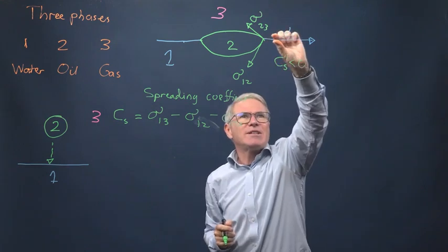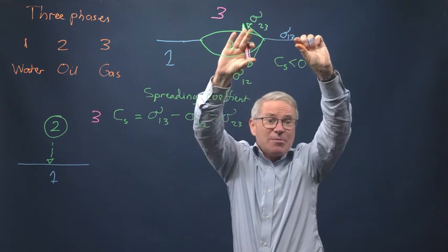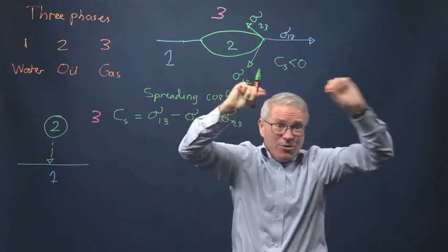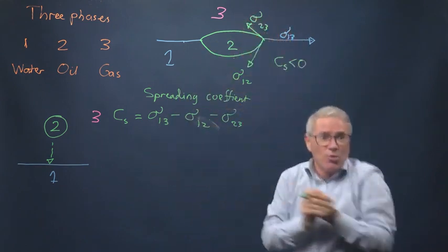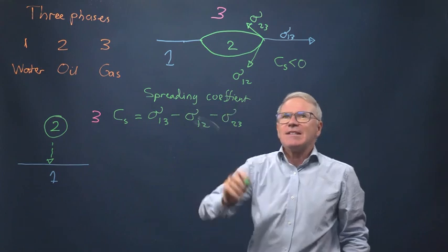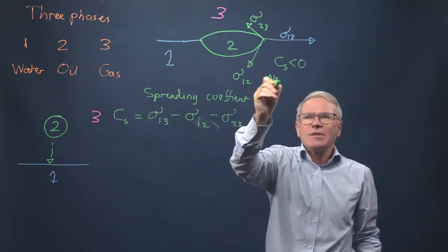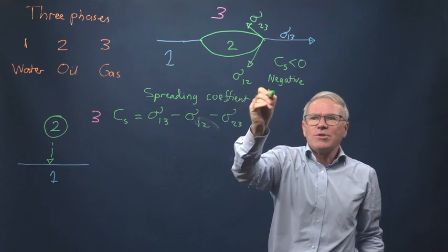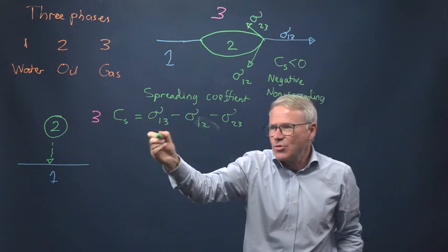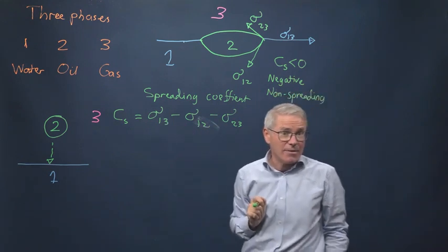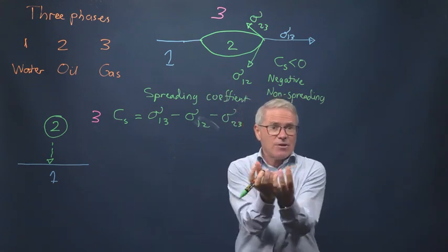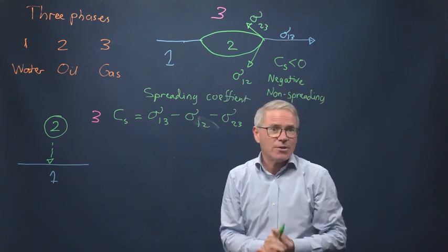Why is that? Well, this interfacial tension must be less than the sum of the other two. Because if it's greater than the sum of these two, even as the droplet gets thinner and thinner, you still can't have a force balance. So if we have a negative spreading coefficient — non-spreading — this interfacial tension minus those two gives a negative number, and you have a non-spreading oil that just floats on the surface with this vertical balance of forces.